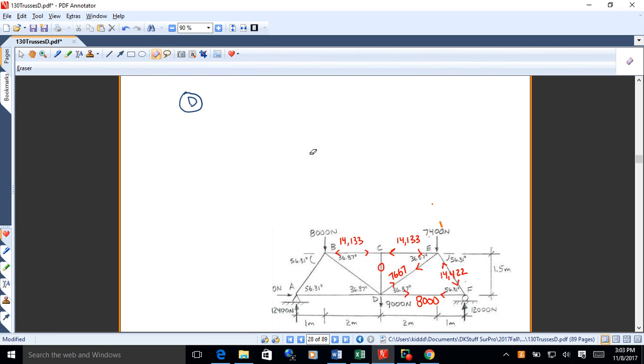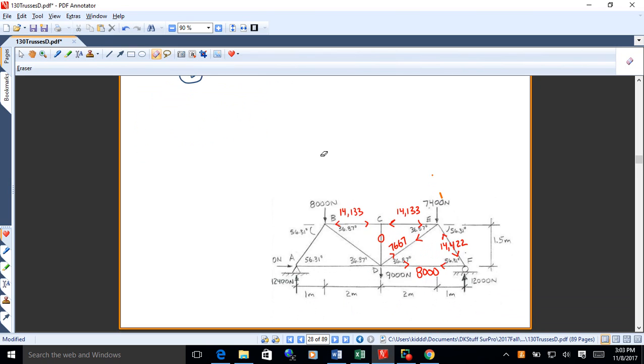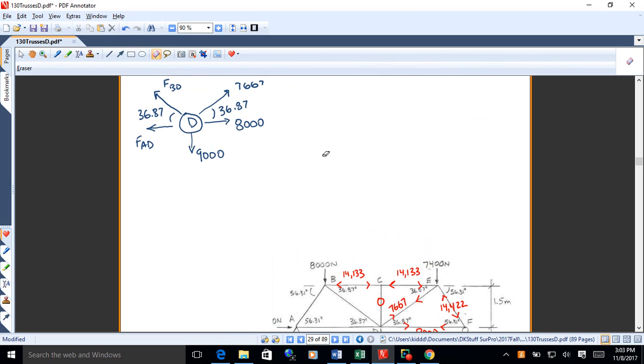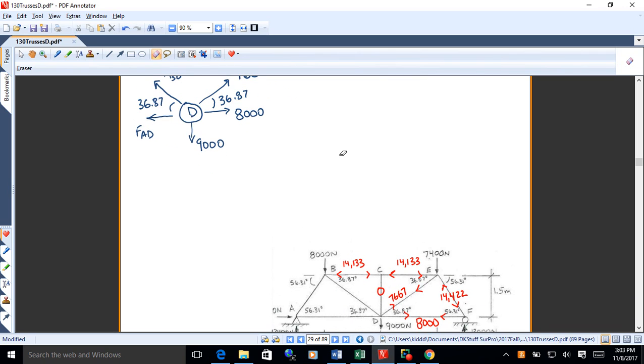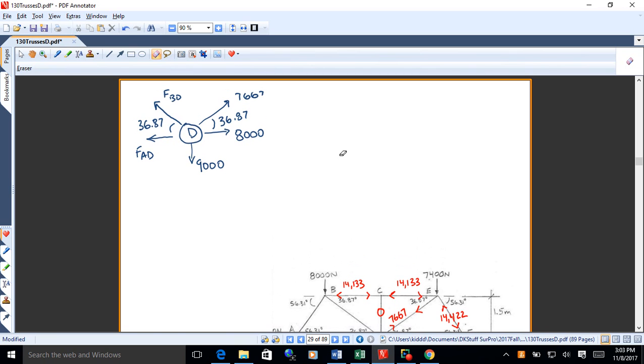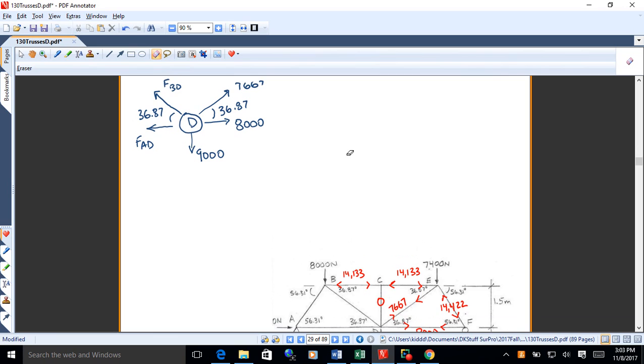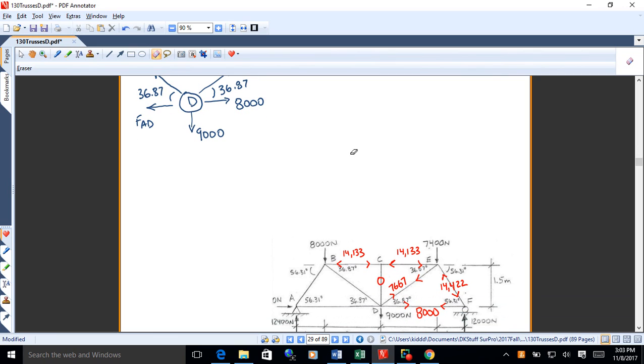All right, let's move into the free body diagram now that you've drawn that hopefully. So there we go. So I've got the existing forces there on the right, the 8,000 that I found. That's tension on DF, so that pulls on D. We've also got tension on DE, so that pulls on D as well. I'm not showing CD because it's zero, so it really doesn't amount to anything.